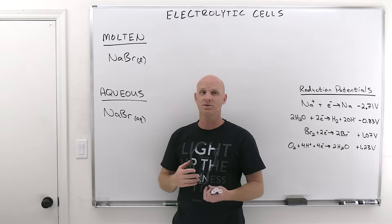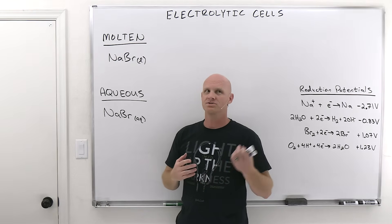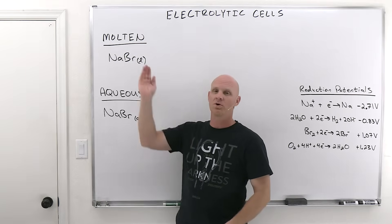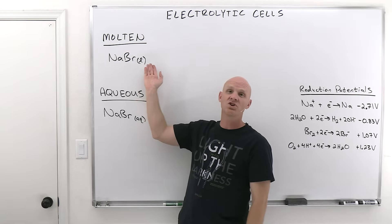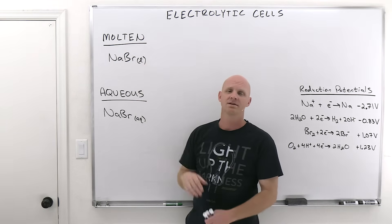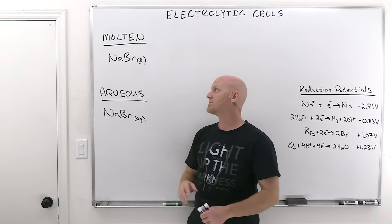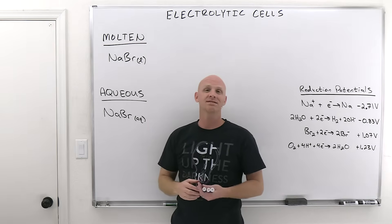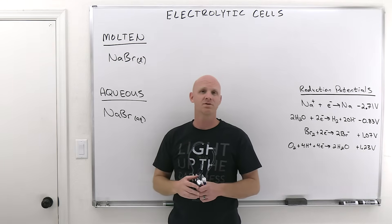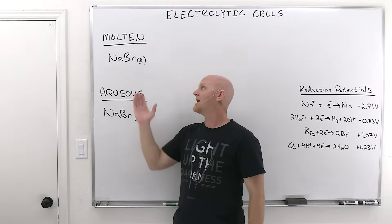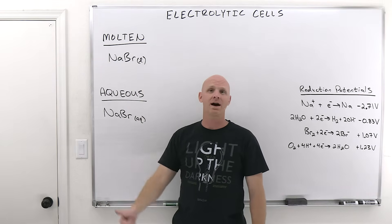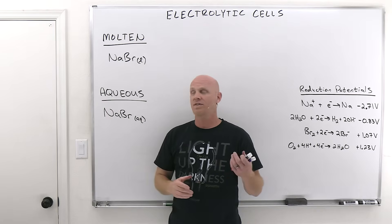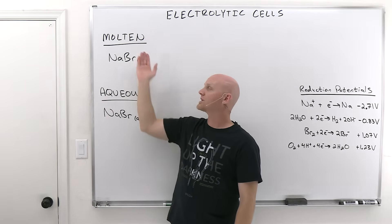The big difference between the two is: do you have water present? Aqueous electrolysis — yes. Molten electrolysis — no. Molten electrolysis only takes place at elevated temperatures generally, because ionic compounds have very high melting points normally.